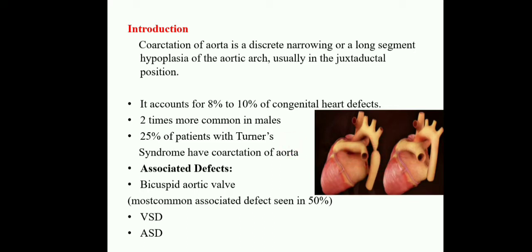Coarctation of aorta is a discrete narrowing or a large segment of hypoplasia of the aortic arch. What is hypoplasia? Hypoplasia means increased cell production at that part. Because of some compression, increased cell production is there, so it may obstruct that organ part — the aortic part. This is called coarctation of aorta.